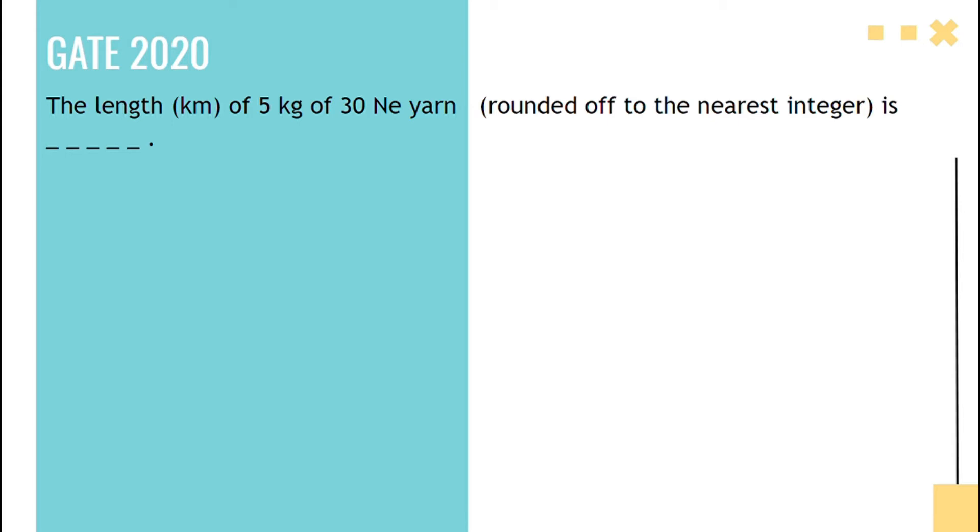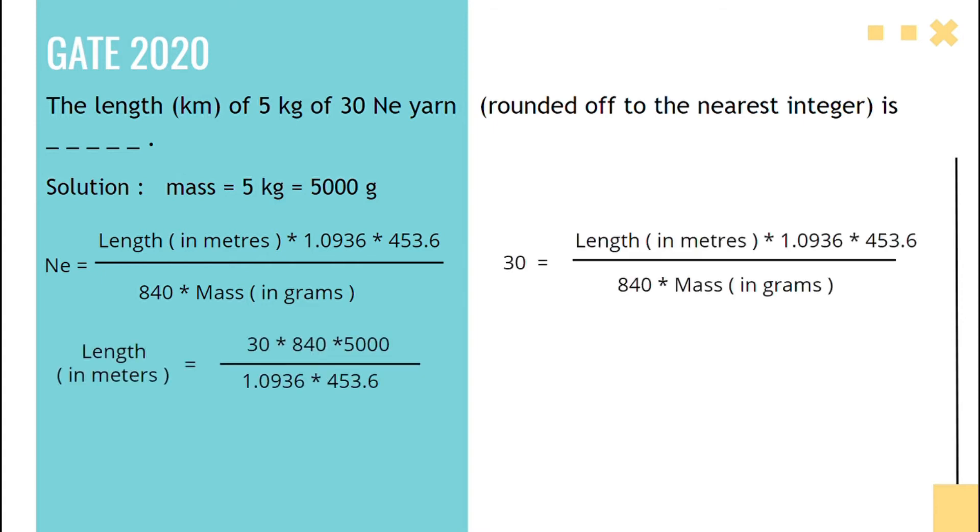Given that mass equals 5 kg, that is 5000 grams. Substituting mass in grams and count in English count formula, keeping length in meters as one side, we can arrive 254,003.089 meters.